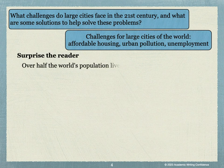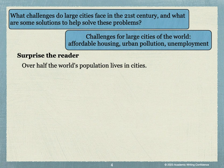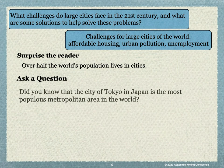Let's try thinking of a sentence we could use with each type of hook. The first type was a hook that would surprise the reader. Here is a possible hook: Over half the world's population lives in cities. If we wanted to ask a question, we could use something like this: Did you know that the city of Tokyo, Japan, is the most populous metropolitan area in the world?